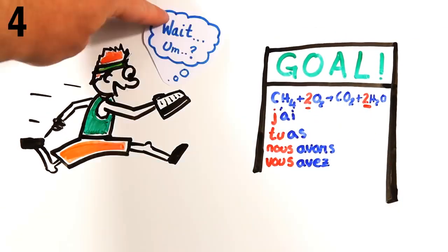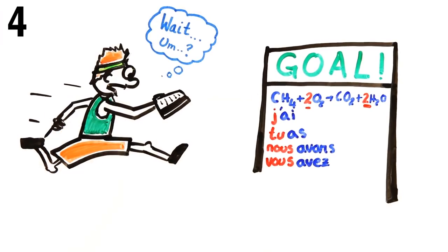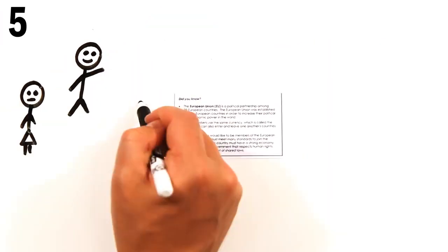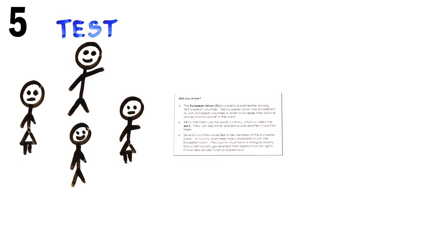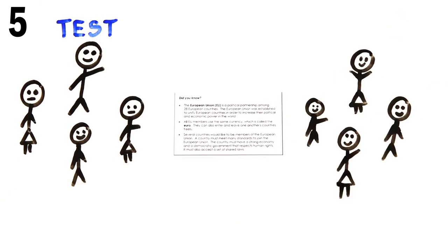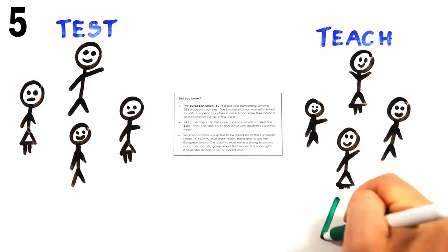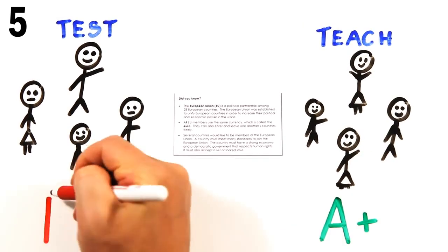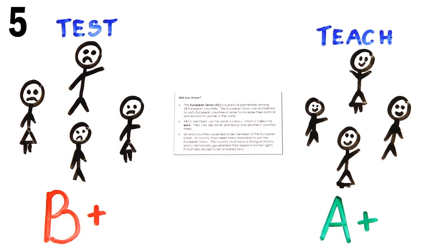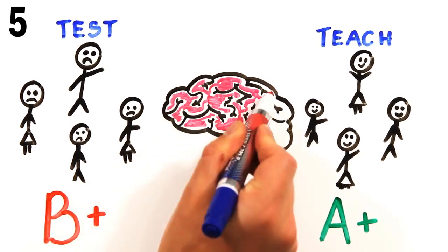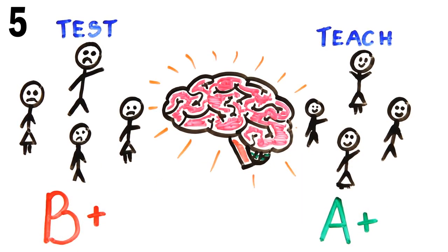If you can't explain it simply, then you don't understand it well enough. In studies where individuals were asked to learn a passage, and then half were told that they would be tested on the material while the other half were told they would have to teach it to other students, participants expecting to teach it did much better at understanding the main points. When you're expecting to teach, your brain organizes the information in a more logical, coherent structure.